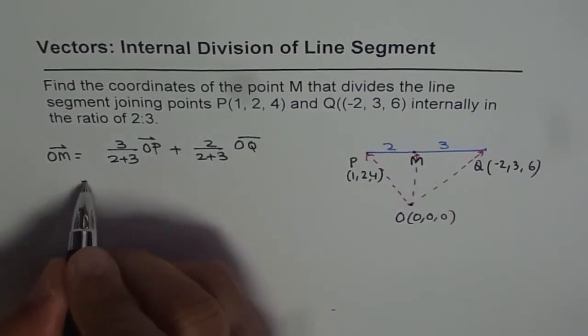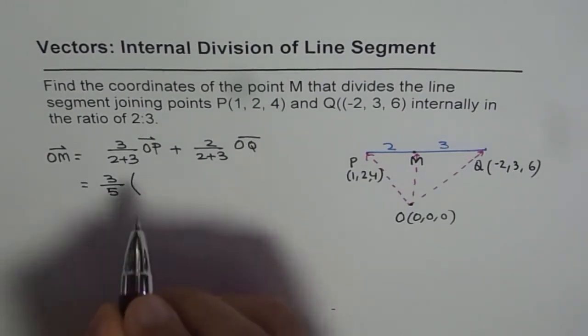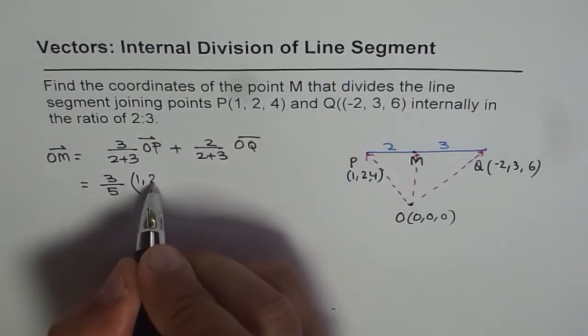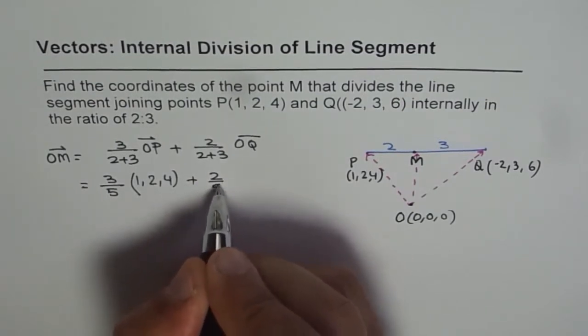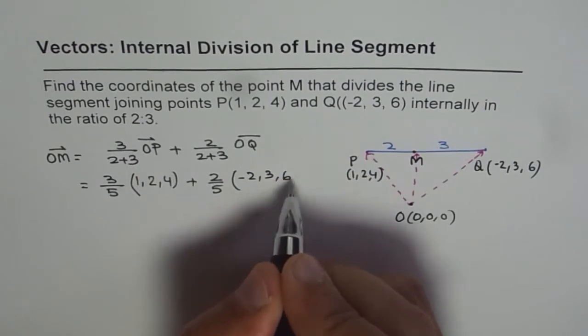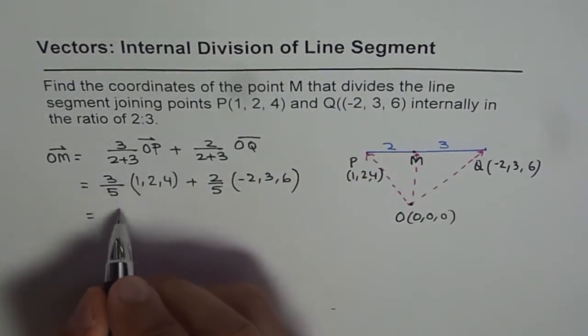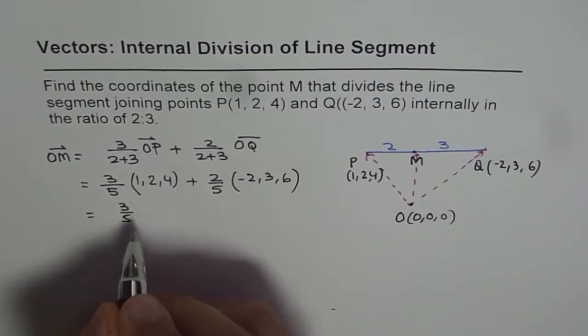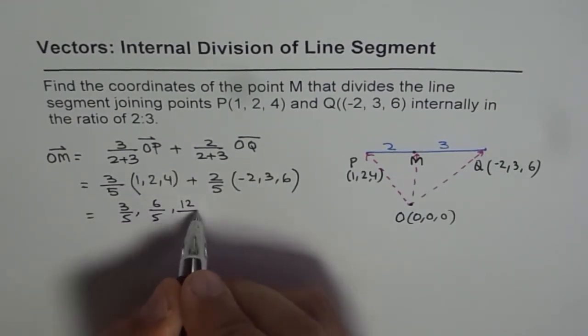From here we get OM = (3/5)(1, 2, 4) + (2/5)(-2, 3, 6). So let us solve it. We get (3/5, 6/5, 12/5) plus (-4/5, 6/5, 12/5).